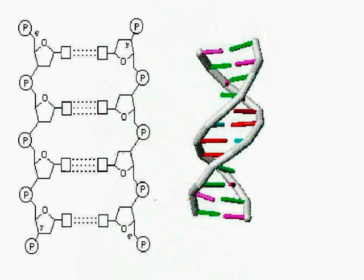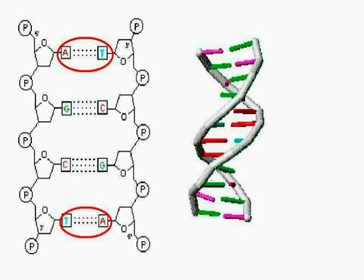DNA consists of two intertwining strands, which are basically joined-up chemicals called nucleotides. Just four different types of nucleotide are found on each strand: adenine, thymine, cytosine, and guanine. To glue the two strands together, adenine always pairs with thymine and cytosine always pairs with guanine — that's just the nature of their chemical bonds.